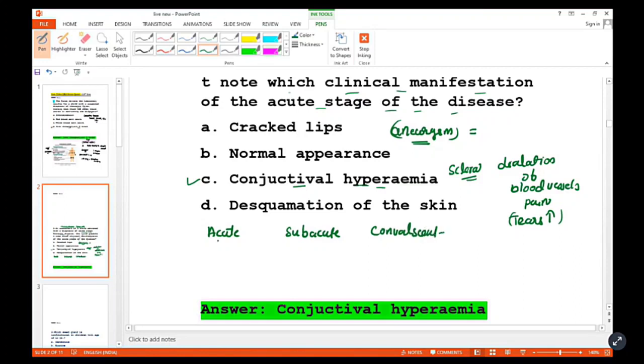In the acute stage, symptoms include conjunctival hyperemia with dilation of blood vessels of the conjunctiva causing red sclera.